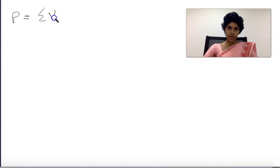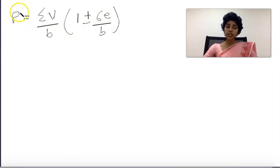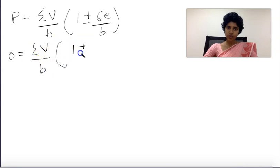The formula is sigma V by b times 1 plus or minus 6e by b. For the no tension case, the minimum stress equals zero.